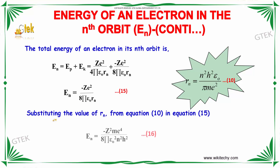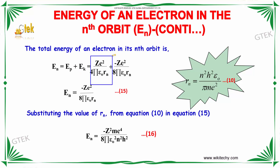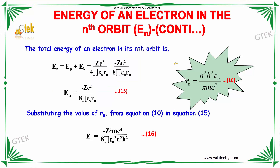The total energy of the electron in the nth orbit is calculated by adding the potential energy and the kinetic energy. Substituting the values of potential energy and kinetic energy, the total energy is minus ZE² / (8πε₀·Rn), where Rn = n²ħ²ε₀ / (4π·me²).